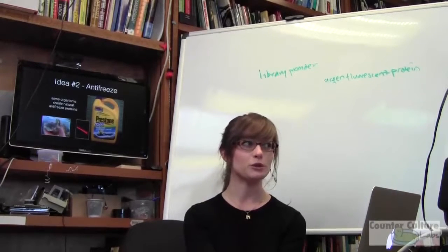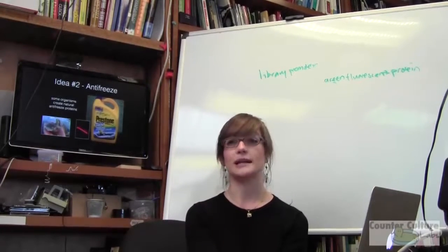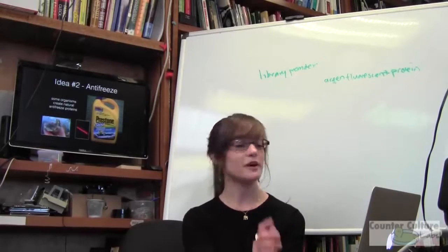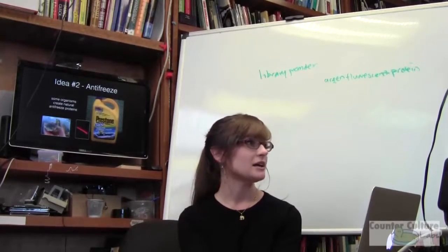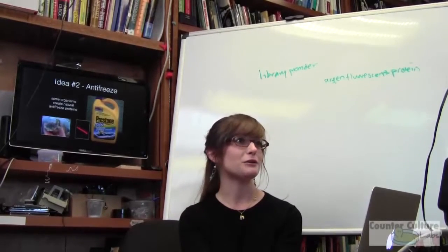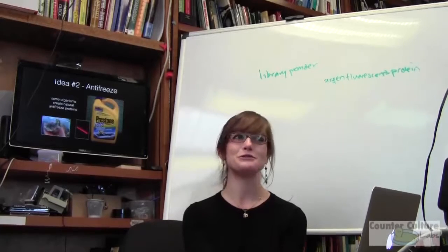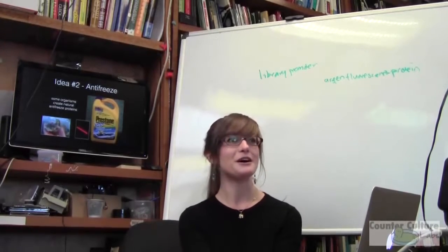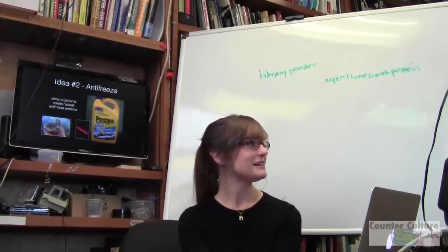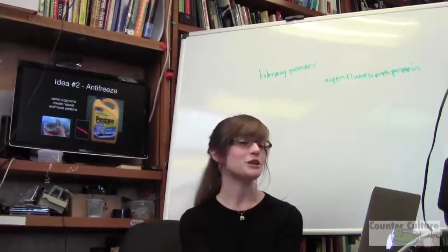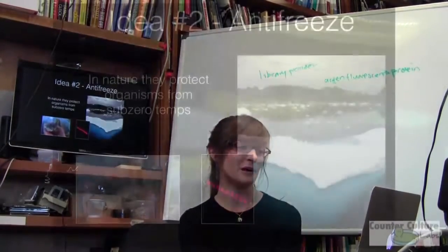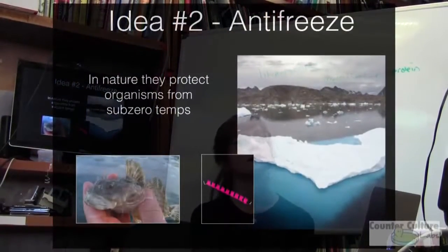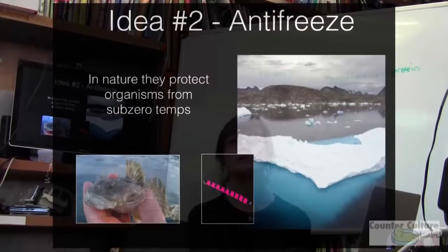Many anti-freeze proteins are short proteins, so you can get them synthesized and pop them into a vector, potentially giving E. coli, yeast, apples, or whatever anti-freeze properties. There's been some iGEM work on this. Isn't there some agricultural crop that already does that? I believe so — like tomatoes, oranges, or strawberries.